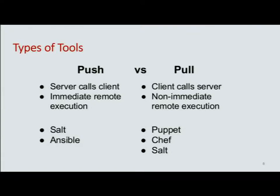Push versus pull model. In one kind of configuration management tool, you can tell the tool to go run its tasks on a particular client or list of clients — you're pushing tasks out. For other types, you leave that responsibility to the client to pull tasks from the server. Chef and Puppet are primarily pull-based systems, whereas Ansible is push. Salt, depending on how you use it, can be push as well as pull-based.